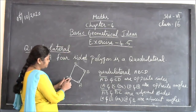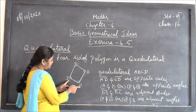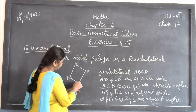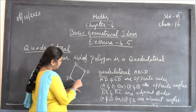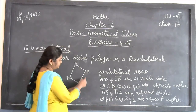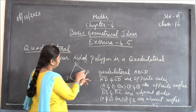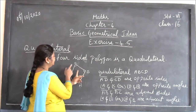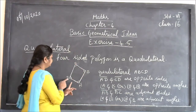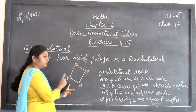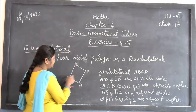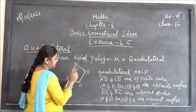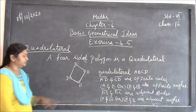Adjacent angles are near angles. Angle A and angle B are adjacent angles. Angle B and angle C are adjacent angles. Angle C and angle D are adjacent angles. You should not say B and D — those are opposite angles. Adjacent means near, right angles.